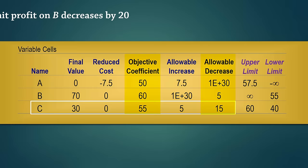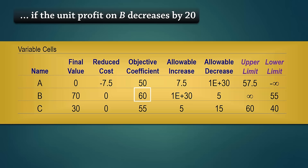So what will happen to the optimal solution if the unit profit on B, that is the coefficient, decreases by 20? We can see here that the allowable decrease on B is 5. Therefore, the optimal solution will change if we decrease it by 20. That is, these final values will no longer be optimal.